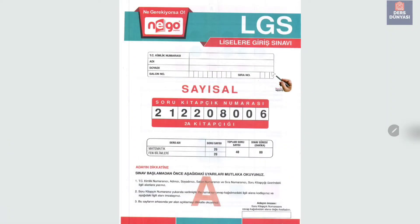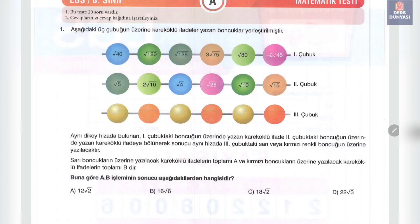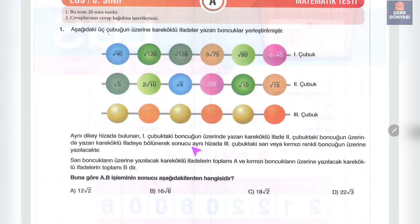Bu haftaki denememiz Nego denemesinin 6. denemesi. Birinci sorumuzda üç çubuğun üzerine karaköklü ifadeler yazan boncuklar yerleştirilmiştir. Aynı dikey hizada birinci çubuktaki boncuğun üzerindeki karaköklü ifade ikinci çubuktakine bölünecek, sonuç üçüncü çubuktaki sarı veya kırmızı boncuğun üzerine yazılacak. Sarı boncukların toplamı A, kırmızıların toplamı B olacak; A ile B'nin çarpımı istenmiş.